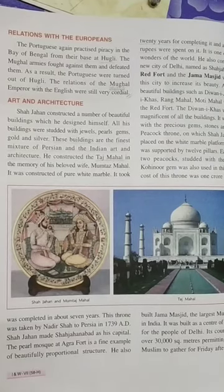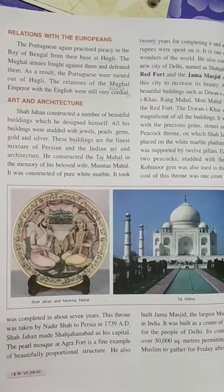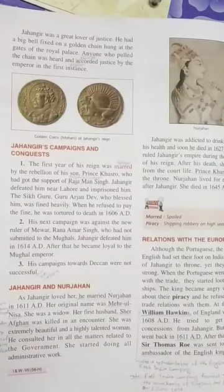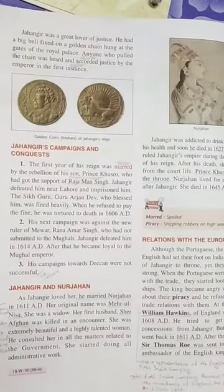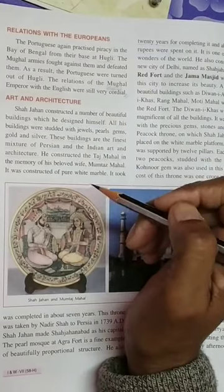Good morning students. This video is for class 7 students. This is your history class and I am Suraj Kumar. We were studying Chapter 6, which is the Mughal Empire. We had previously studied the expeditions and Central Asian campaigns of Shah Jahan. Today we will study about the art and architecture made by Shah Jahan in his kingdom.